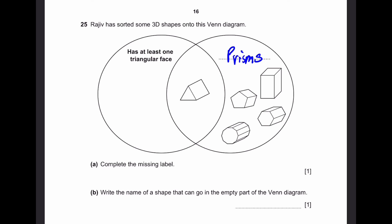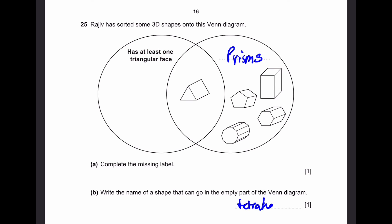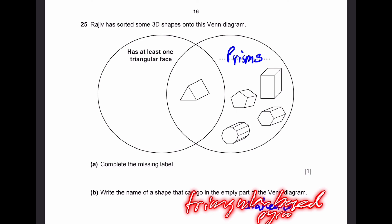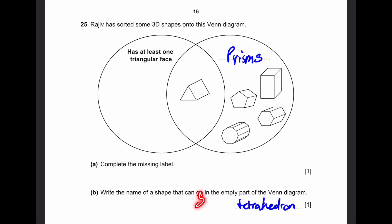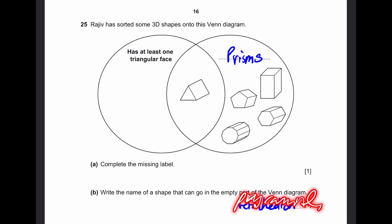Part B: Write the name of a shape that can go in the empty part of the Venn diagram. That would be a shape with at least one triangular face but not a prism. For example, a tetrahedron — that's simply a triangular base pyramid. You could write triangular base pyramid, or a square base pyramid, or just a normal pyramid. A pyramid can never be a prism, so any pyramid is correct.